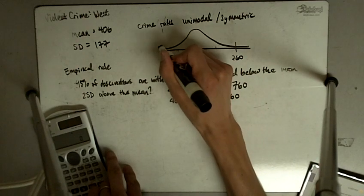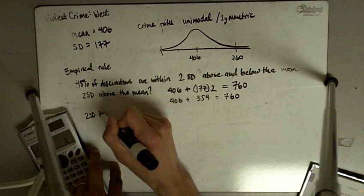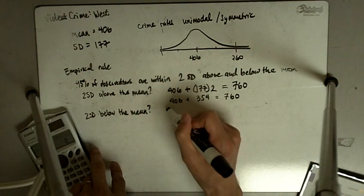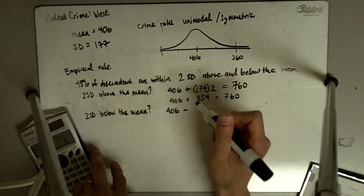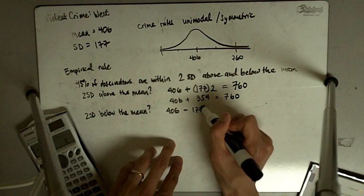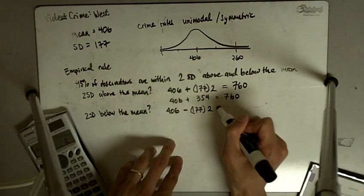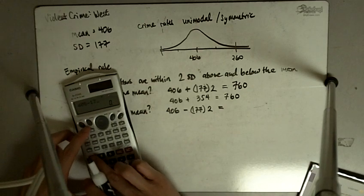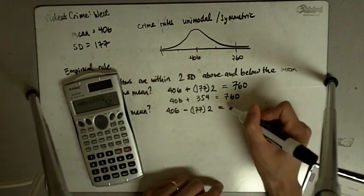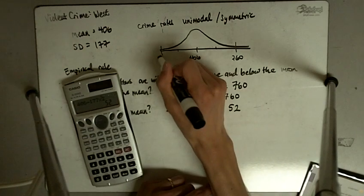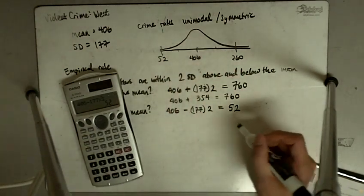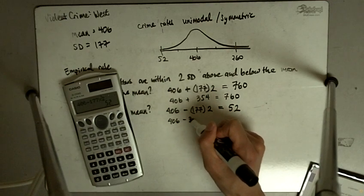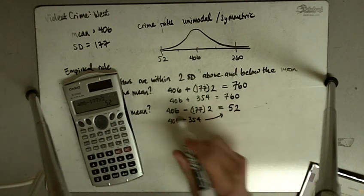And if we go two standard deviations below the mean, that's going to be 406 minus 177 times two. If you don't have a fancy calculator, you do the multiplication first, but you'll get the same answer: 406 minus 354 equals 52. That's the low end.